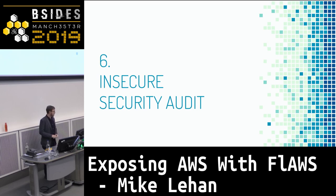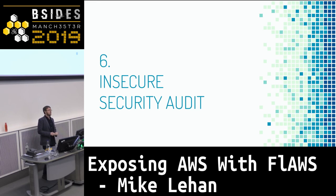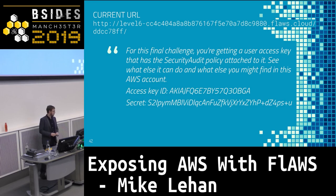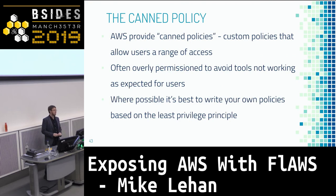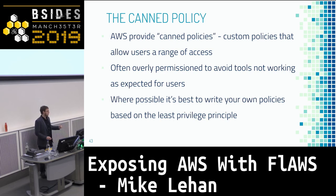Our final challenge: the insecure security audit. For this final challenge, you get a user access key with a policy called 'security audit.' Security audit sounds very formal and nice — but this exploits a very common thing in AWS: the canned policy. AWS has a load of managed policies, like the admin access form which grants access to everything. But if you give someone 'security audit', you'd expect they can audit your account security and that's it. There are a number of AWS policies that have this kind of risk.